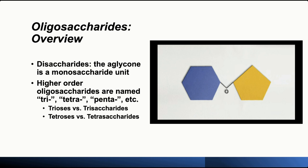Now let's look at the more complicated structures of oligosaccharides. Oligosaccharides can be made of three, four, five, six or more monosaccharides. For three monosaccharides, the name starts with 'tri' — trisaccharides. For four monosaccharides, the name starts with 'tetra' — tetrasaccharides. For five monosaccharides, it starts with 'penta' — pentasaccharides.